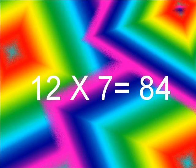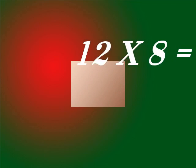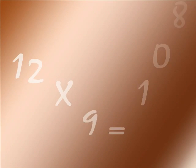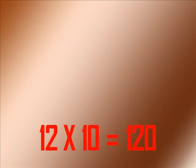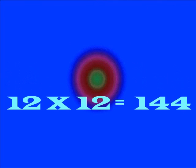12 times 7 is 84. 12 times 8 is 96. 12 times 9 is 108. 12 times 10 is 120. 12 times 11 is 132. And 12 times 12 is 144.